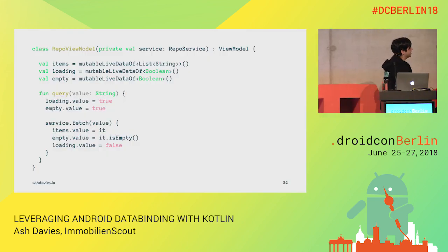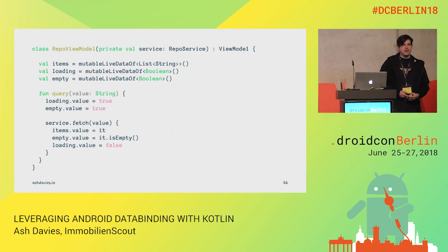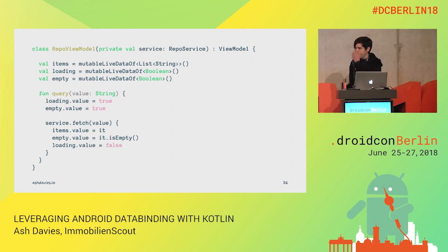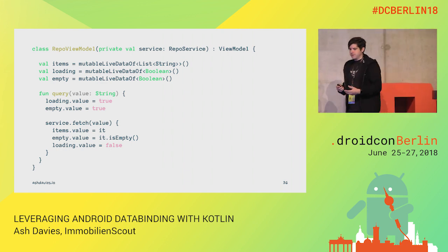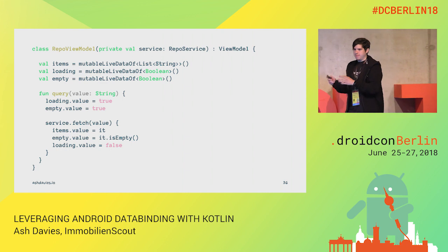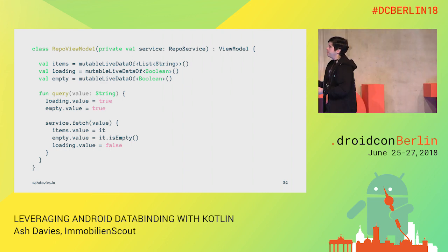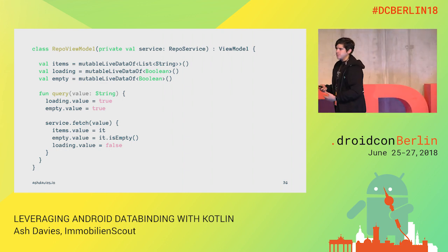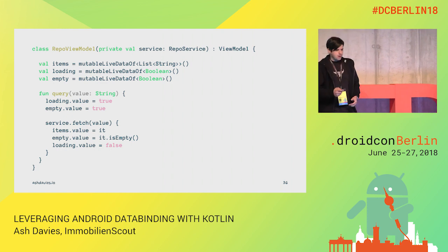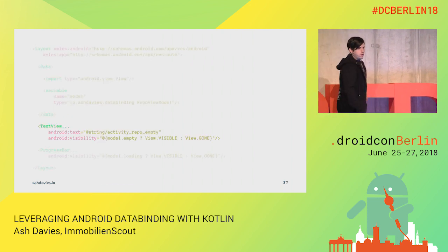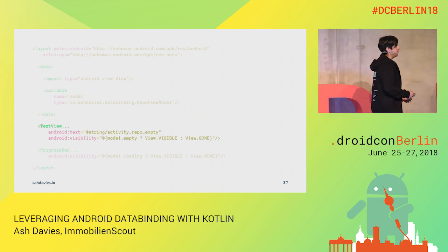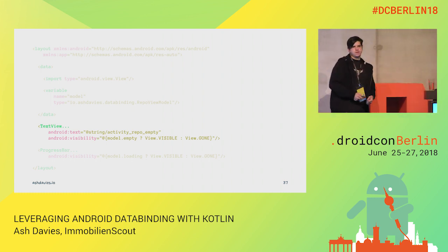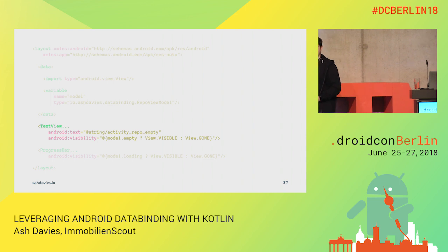How can we alleviate this? We can create an additional property in our view model to represent the empty state. It's only modifying the empty state based upon the result of the model, but because it's happening in our view model it's much more easily testable. So in our layout, we now have a cleaner expression.